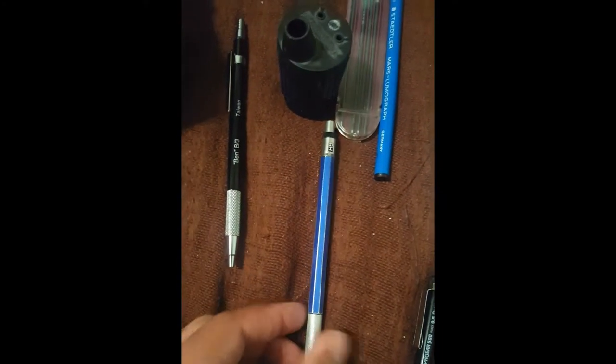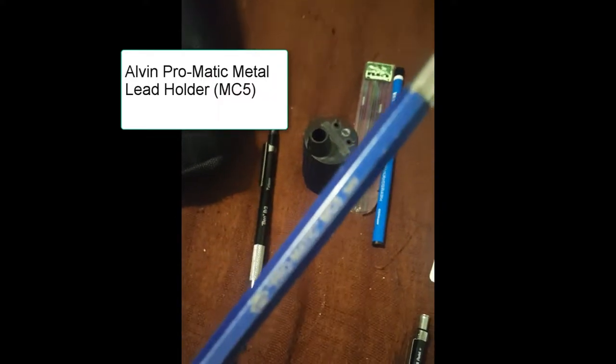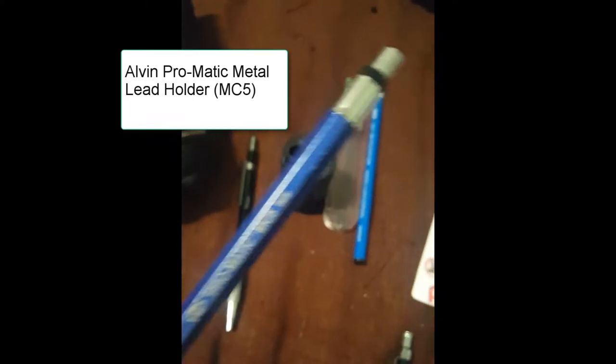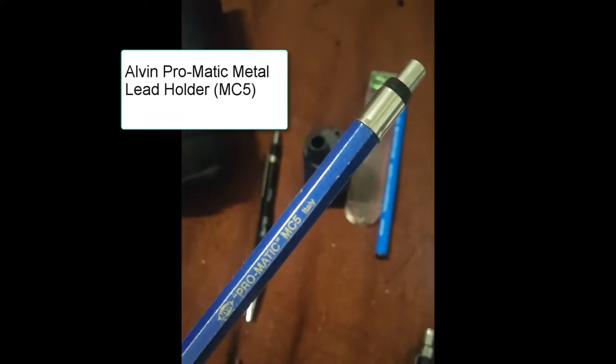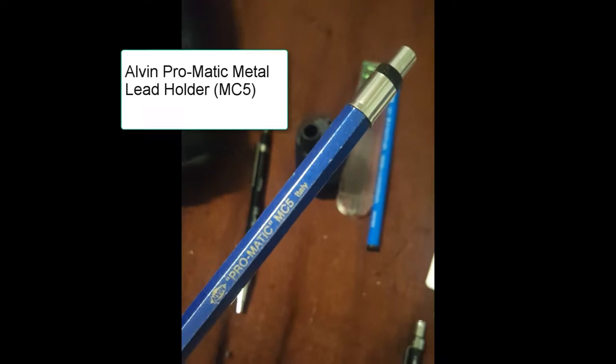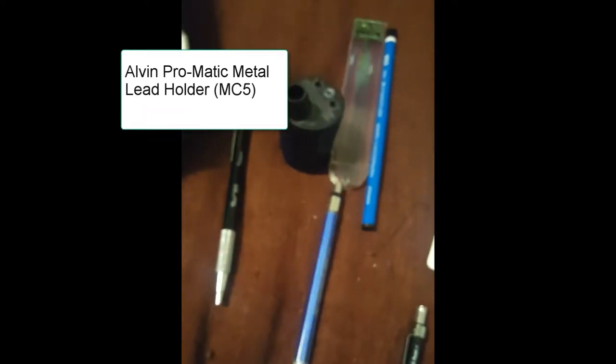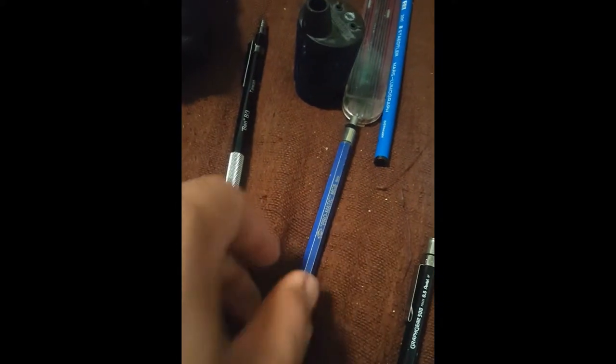Next up I have this, which is an Alvin, I think it's like an Alvin Pro-Matic MC5. So it's a nice mechanical pencil. It has a decent amount of weight to it, it's pretty balanced. Doesn't have an eraser, doesn't have a sharpener. Has like a little claw tip that opens up and allows you to use various sizes of leads.